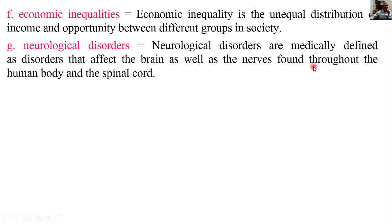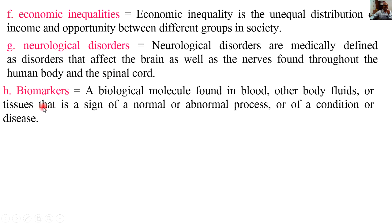Neurological disorders are medically defined as disorders that affect the brain, the nerves throughout the human body, and the spinal cord. Biomarkers are biological molecules found in blood, other body fluids, or tissues that are signs of a normal or abnormal process or condition of disease.